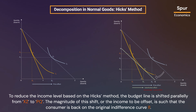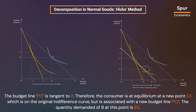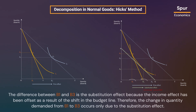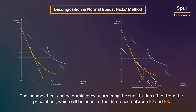To reduce the income level based on the Hicks method, the budget line is shifted parallelly from XC to PQ. The magnitude of this shift, or the income to be offset, is such that the consumer is back on the original indifference curve I1. The budget line PQ is tangent to I1. Therefore, the consumer is at equilibrium at a new point E3, which is on the original indifference curve but is associated with the new budget line PQ. The quantity demanded of B at this point is B3. The difference between B1 and B3 is the substitution effect. The income effect is obtained by subtracting the substitution effect from the price effect, which equals the difference between B2 and B3.